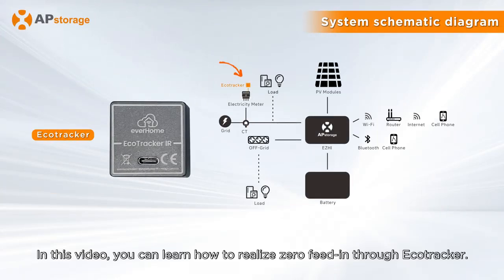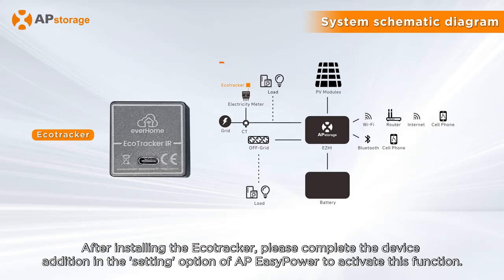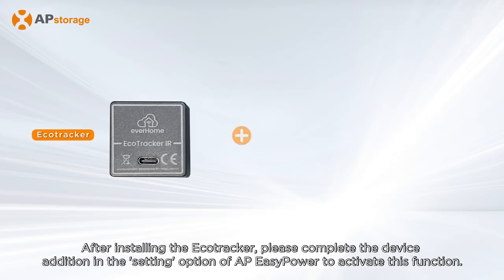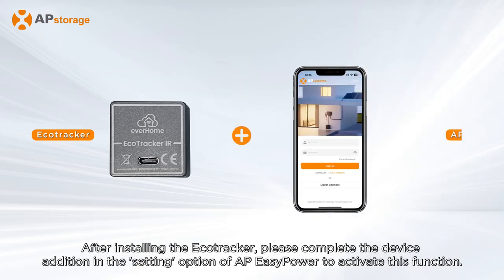In this video you can learn how to realize zero feed-in through Echo Tracker. After installing the Echo Tracker, please complete the device addition in the setting option of AP Easy Power to activate this function.